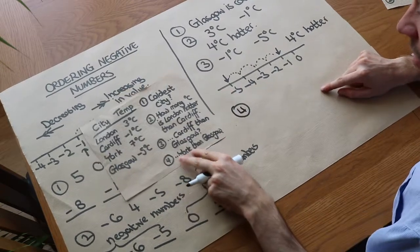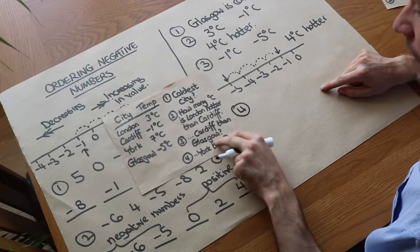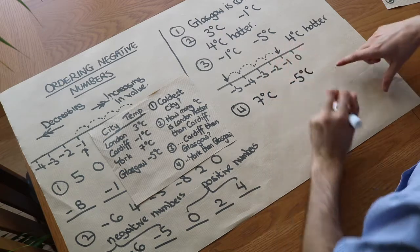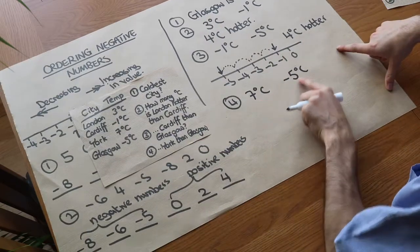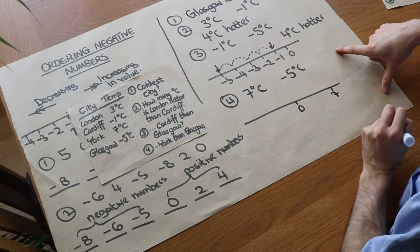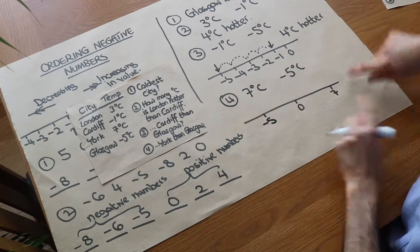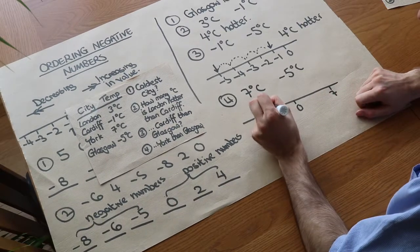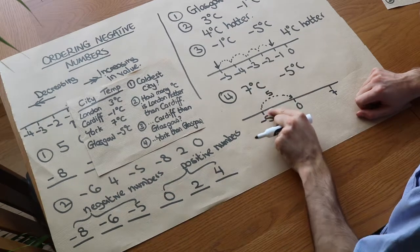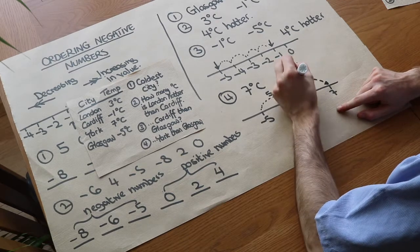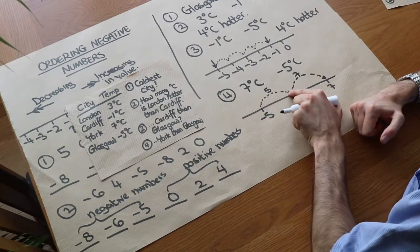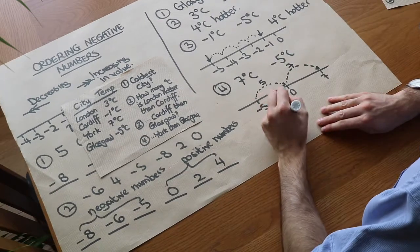How many degrees hotter is York than Glasgow? We're comparing York at seven degrees Celsius and Glasgow at minus five degrees Celsius. It would be cumbersome to write the whole number line, so let's visualize it differently. We've got zero, seven degrees here, and minus five degrees here. The difference from minus five to zero is five — adding five gets us to zero. Then from zero to seven is another seven. So the total difference from minus five to seven is five plus seven, which is twelve degrees hotter.